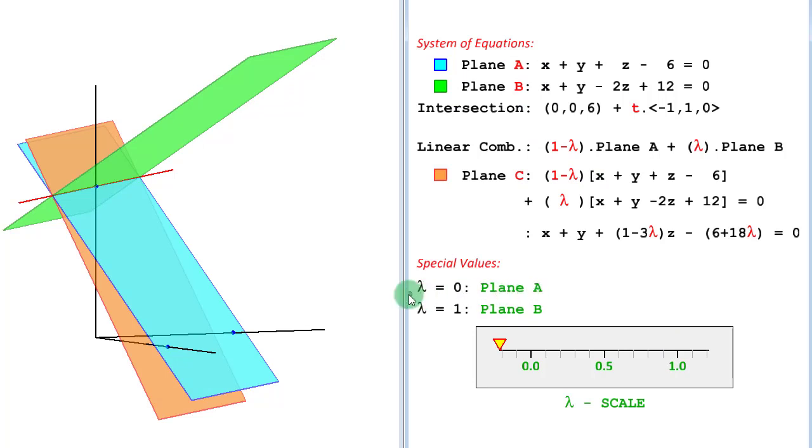So here are the special cases. At lambda is equal to 0, it becomes plane A; lambda equal to 1, it becomes plane B. So this is all about linear combinations in three-dimensional space.